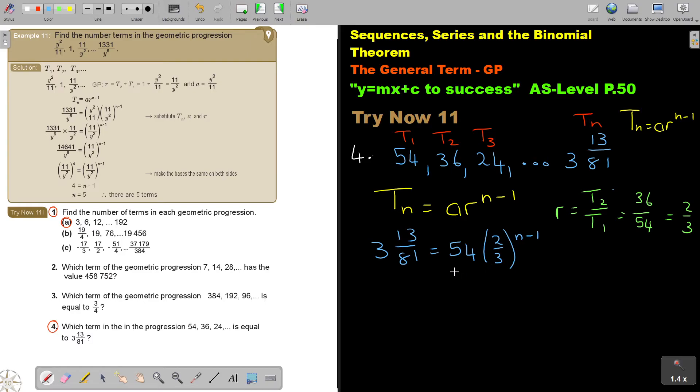Again, you cannot multiply. But what you can do is you can divide by 54. And use your calculator. Press 3, ABC, 13, ABC, 81, divide 54. Just do it like that. And you're going to get 128 over 87. It's going to give you as a fraction. And 2187. And that is going to be the 2 over 3 N minus 1.